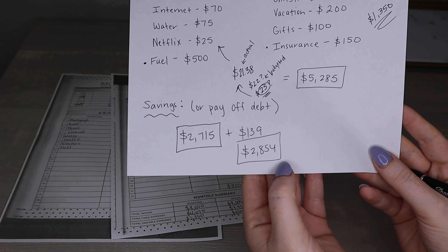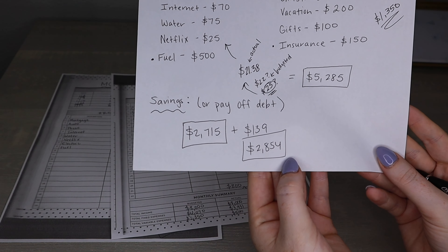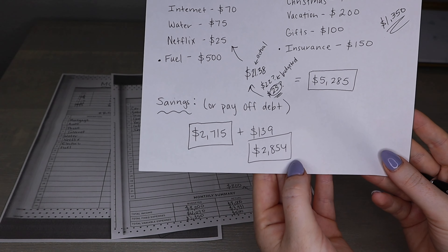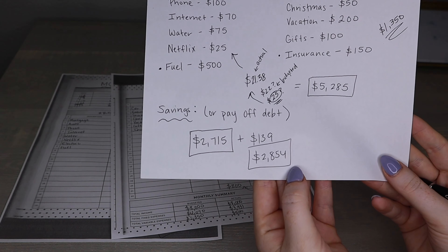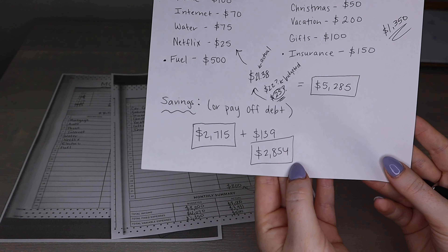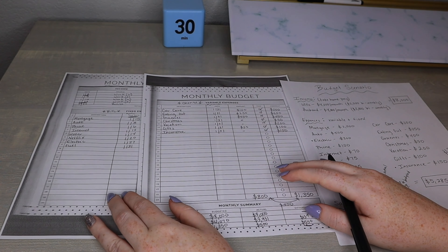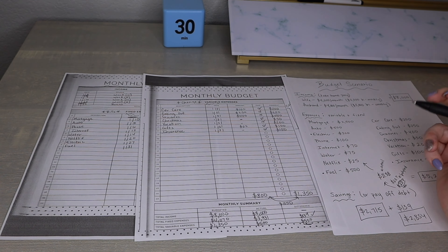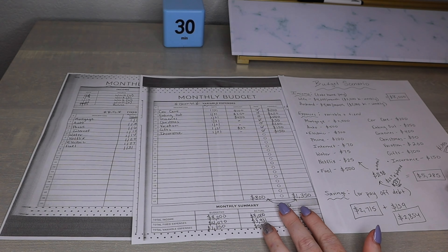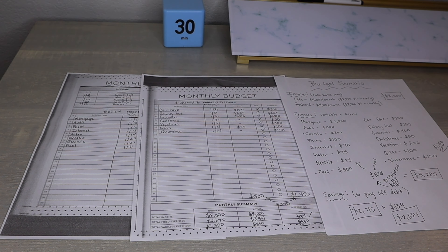We just completed a full mock budget using income, expenses, and showing how to determine how much you have available to save or pay down debt. There are so many different ways to run a budget — take what I do and make it your own. I find this budget doesn't take a lot of time, just a few hours every month to help you stay on track financially, and once you get rolling it gets even easier to manage.